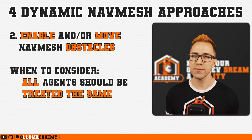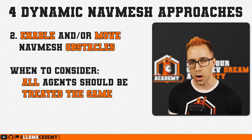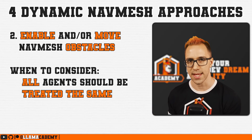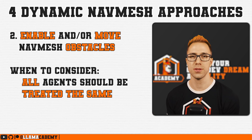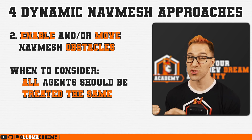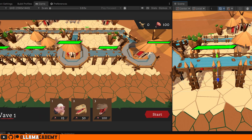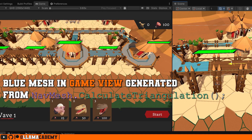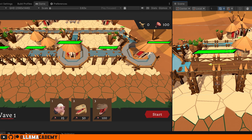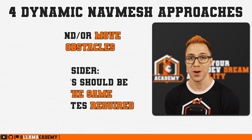If in your game you have relatively few agent types, or you want all agents to treat the obstacle the same, using a nav mesh obstacle is a great option because it is extremely fast — it does not require a rebake and it does update the nav mesh. When you want to calculate nav mesh triangulation, that triangulation considers the carved nav mesh for any obstacles, which is something I learned while trying to solve this problem.